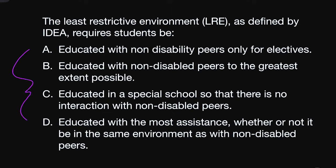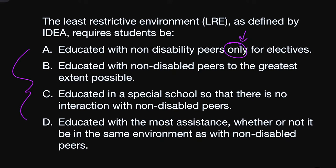I always like to work backwards, especially when we have a lot of long answer choices and long narratives, because it's going to help you narrow it down before you get into the question. Answer A: educated with non-disability peers only for electives. I don't like the word 'only,' especially being educated only for electives — I'm going to mark out A. 'Only' tends to be a bad word in an answer choice because it takes a correct answer and turns it into an incorrect one.